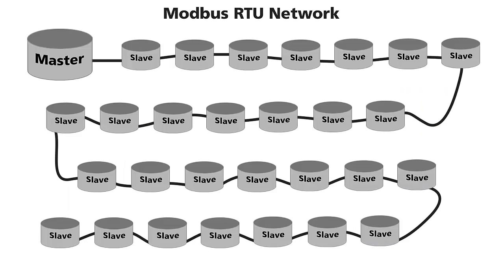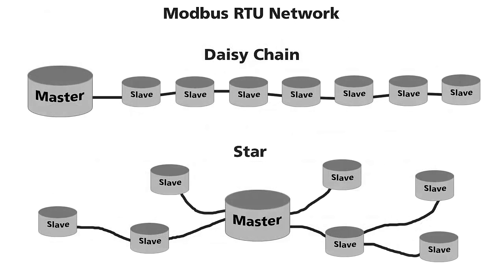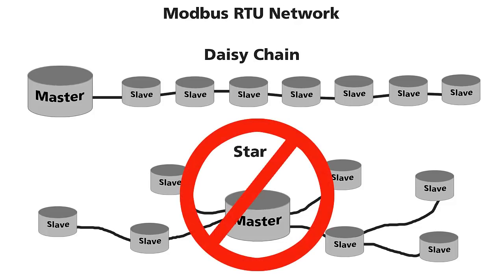Here is a diagram of a serial network where the master is connected to a slave which is then daisy-chained along to all the other slaves on the line. The devices must be connected in a daisy-chain manner. They cannot be connected in a star topology.